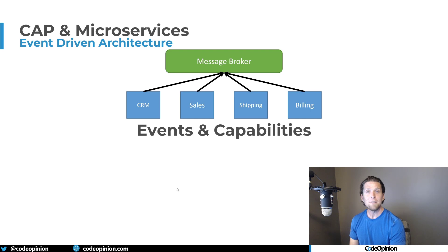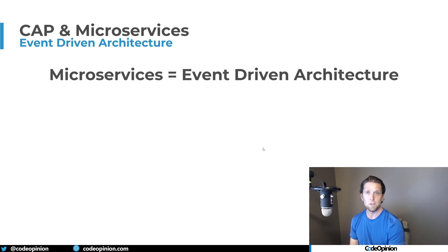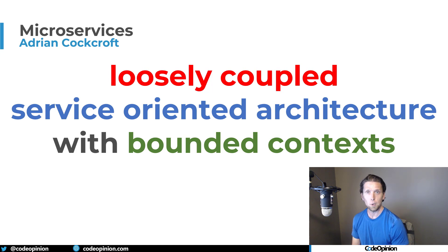So microservices are about events and capabilities. Services contain a set of capabilities — they are the authority of a set of capabilities and the data behind them. They consume events, they publish events, but they don't communicate directly to other services. You could say that a characteristic of microservices is an event-driven architecture: loosely coupled, service-oriented architecture, event-driven, with bounded context and a set of capabilities per service.